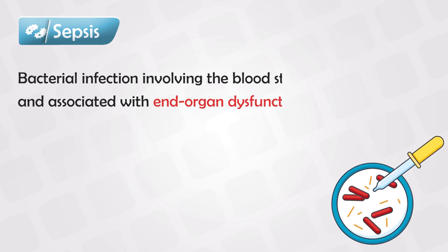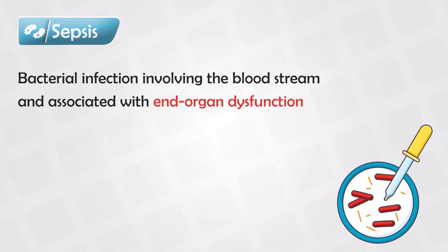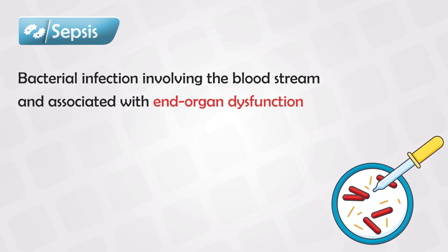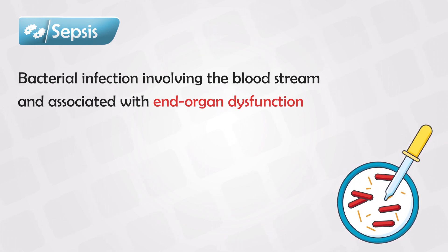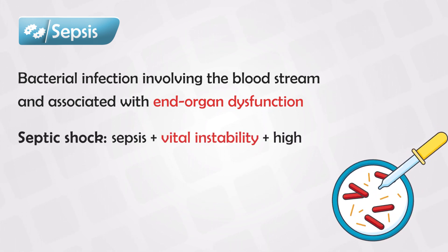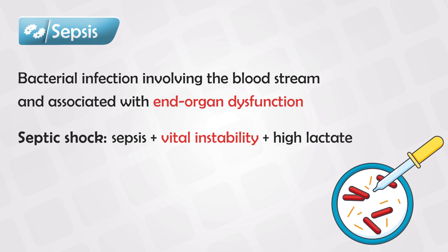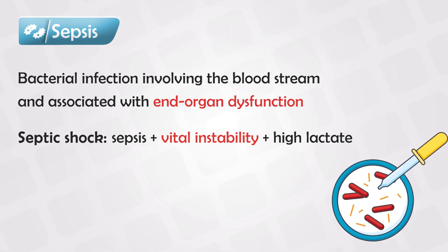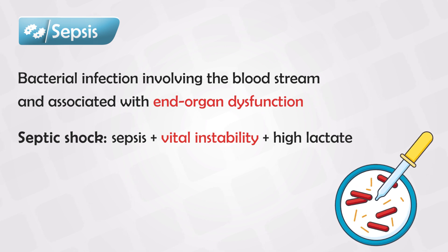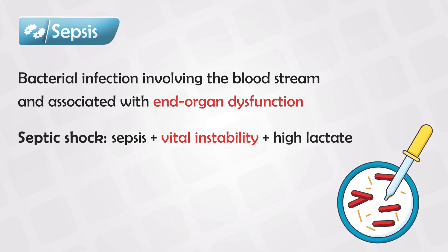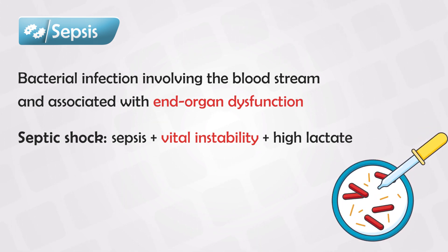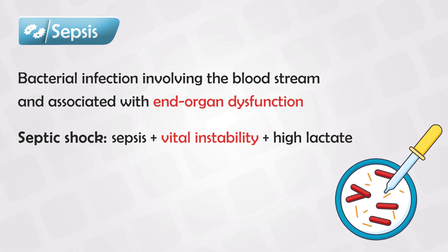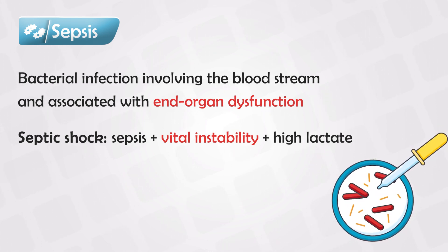Sepsis is defined as having a bacterial infection, mostly involving the bloodstream, associated with end-organ dysfunction. Septic shock, however, is defined as having sepsis with vital instability like hypotension and lactate more than 18 mg per deciliter. Unlike sepsis, septic shock is very serious, and the mortality rate is more than 40%.